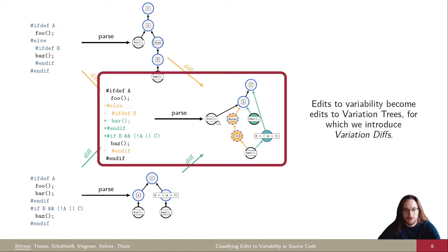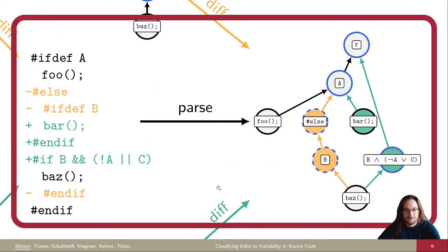Given variation trees as our model for variability, we find that edits to variability then become edits to variation trees, which we then express as variation diffs. We can create variation diffs either from the trees directly or from the text-based diff. When we compare the text-based diff with the tree-based representation, we see that each element in the text-based diff has a corresponding element in the graph. Removed parts are highlighted in orange, added parts in green. For example, we see that this node foo here was unchanged, highlighted in gray, but this annotation, for example, is inserted, highlighted in green, down here.